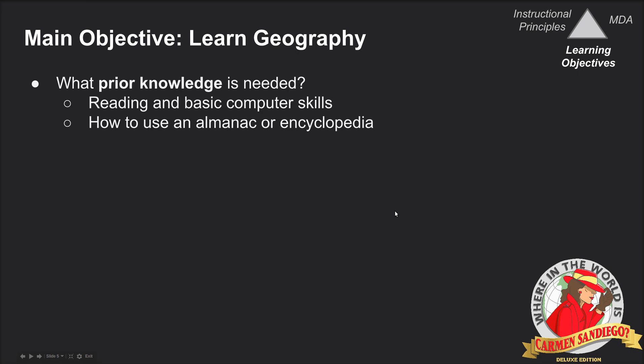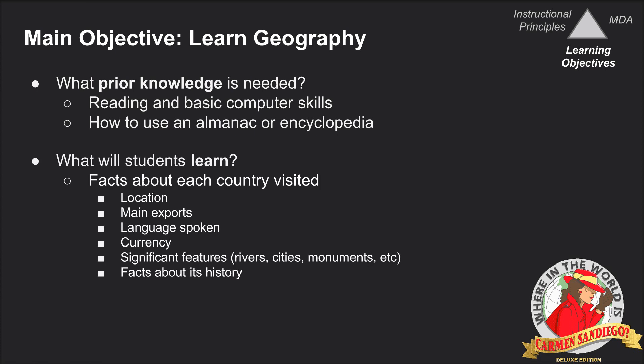Now the learning objectives of the game. Obviously you want to learn geography. The prior knowledge needed for the player is simply basic reading and computer skills so they can make the game work, and then they also need to know how to use an almanac. The goal is for students to learn facts about each country they visit — basically trivia or knowledge. For example, they'll learn how to point it out on a map, what the currency is, what languages are spoken, etc.